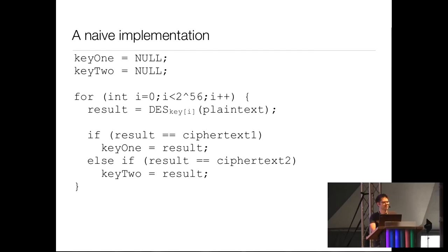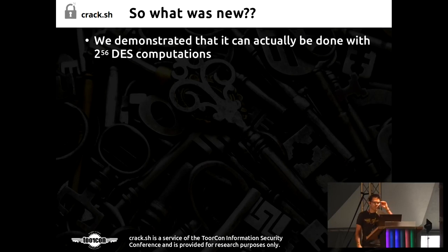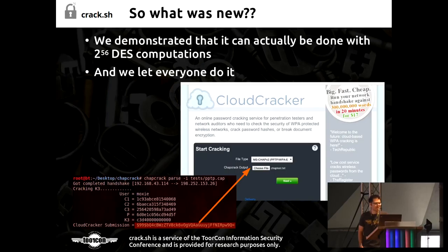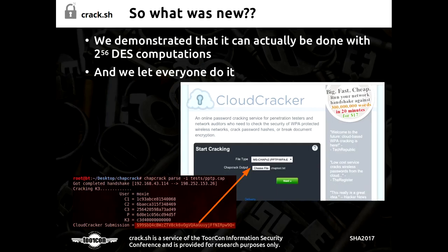We demonstrated a slight optimization to do it in 2^56 instead of the 2^57 that Schneier and Mudge had pointed out. The other big thing about our talk was making it accessible to everybody. Moxie Marlinspike already had a service called Cloudcracker.com. We hooked up a bunch of FPGAs in the back end, tied it into Cloudcracker, and published a Python app to extract the key material for cracking PPTP VPN exchanges. You could submit a token and within 24 hours receive the DES key or NT hash, which you could then use to authenticate to the PPTP network and decrypt all the traffic.